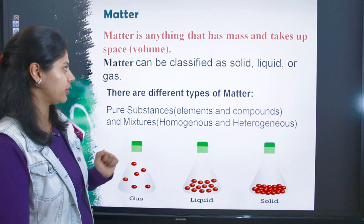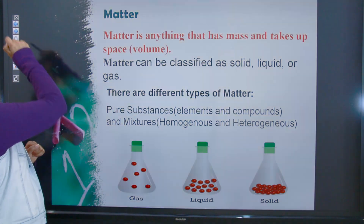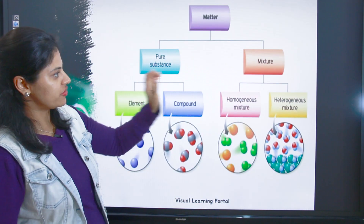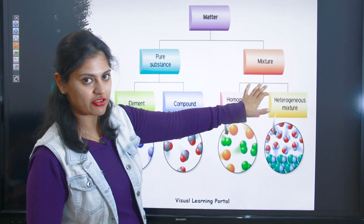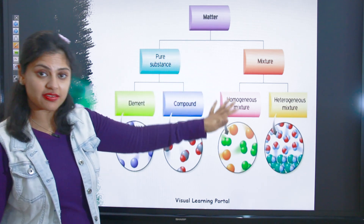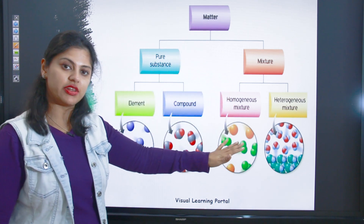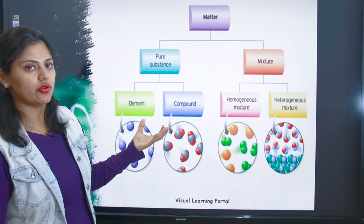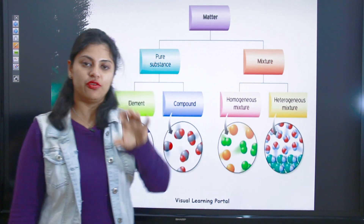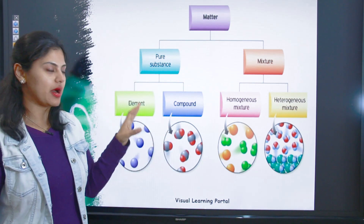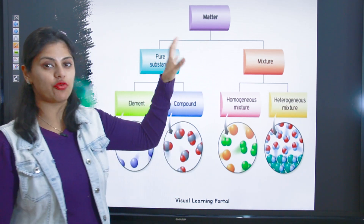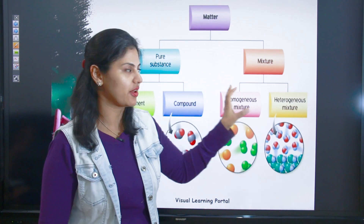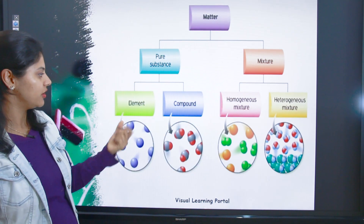Matter is divided into pure substance and a mixture — it's easy to learn with the help of flow charts. Flow charts ko learn kar loge to hamesha mind mein rahega visually. There is matter, and it is distributed into two: pure substance and a mixture.